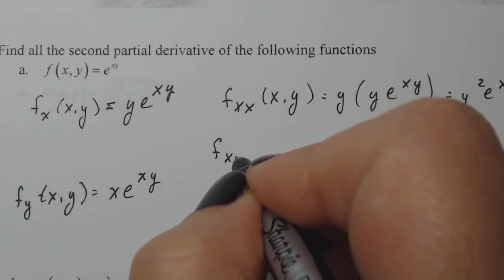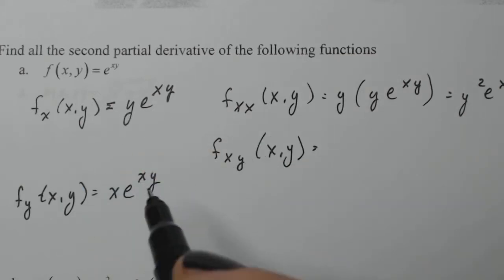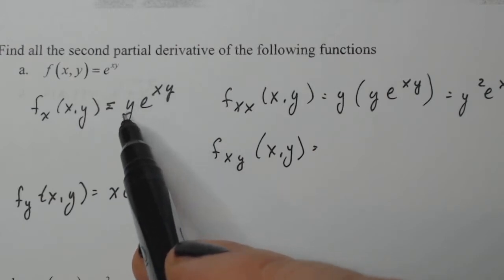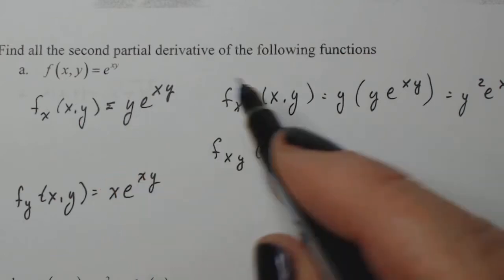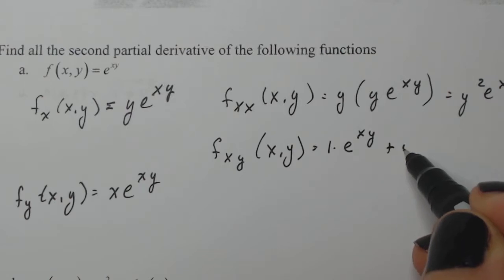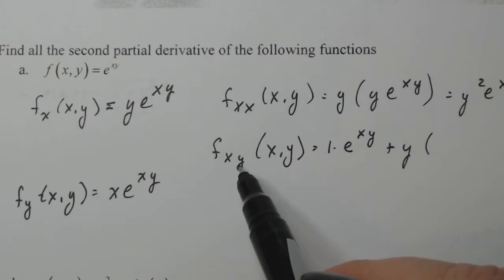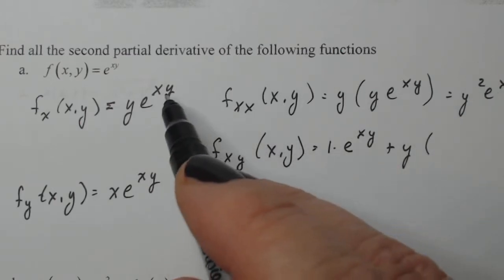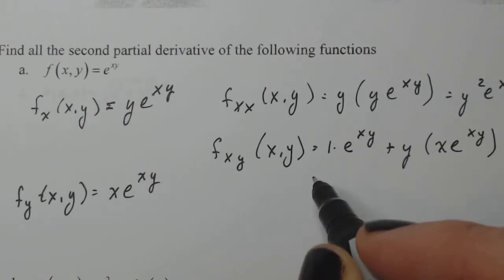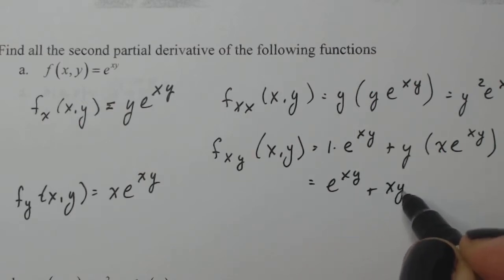Then I have to do f sub xy, so I take the derivative of f sub x with respect to y. Now y is a variable, so I have two functions with y in them and I need to use the product rule. The derivative of the first times the second, plus the first times the derivative of the second with respect to y. That gives me e to the xy plus xy e to the xy.